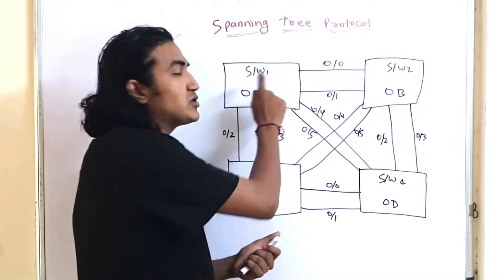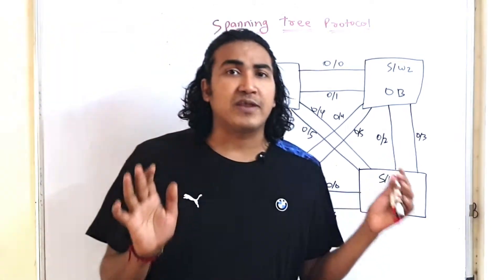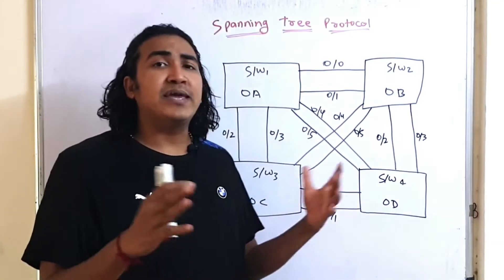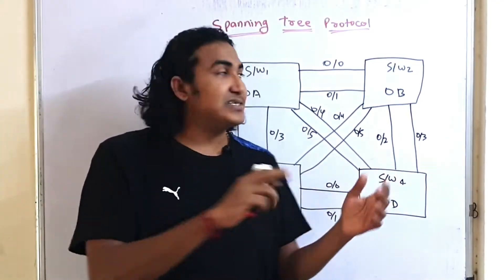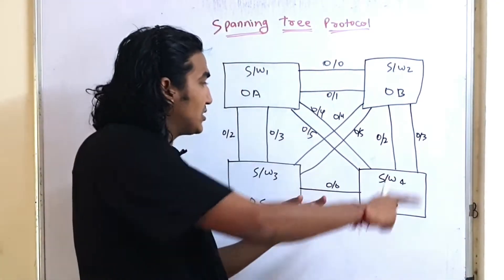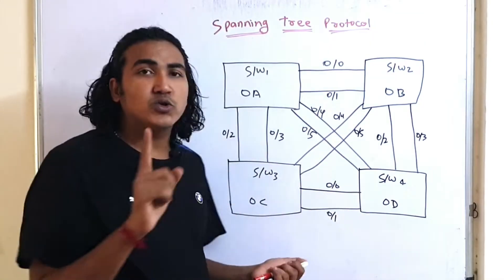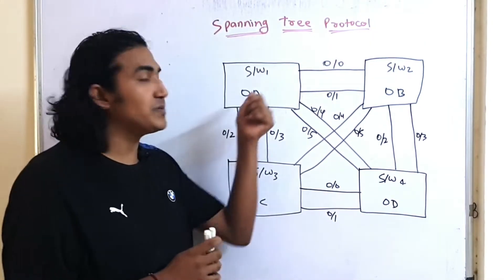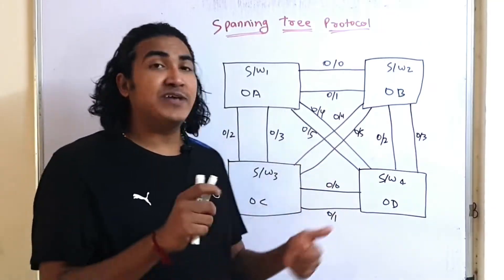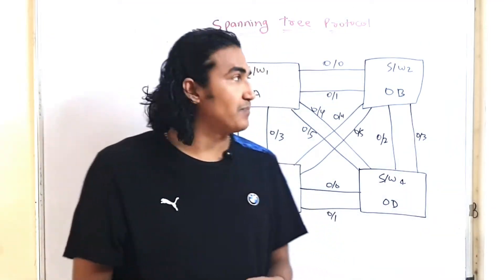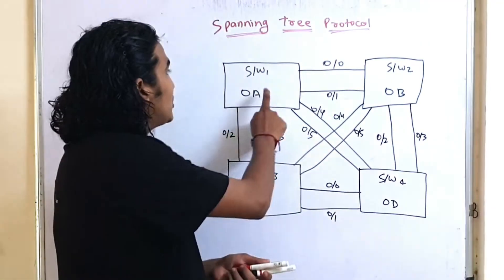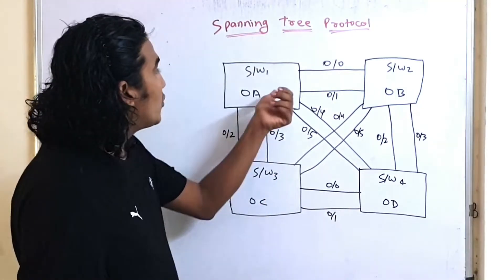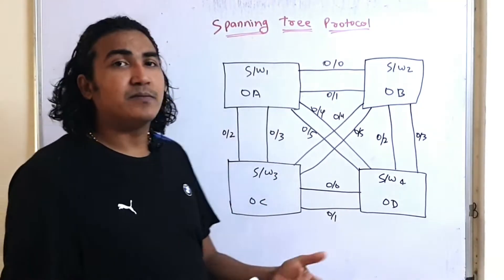Before starting the election, let me explain what a root bridge is. The root bridge is a reference point — the main switch that will manage the entire topology. Out of these four switches, one switch will become the root bridge. The switch which has the lowest bridge ID will become the root bridge.